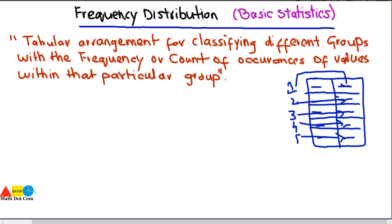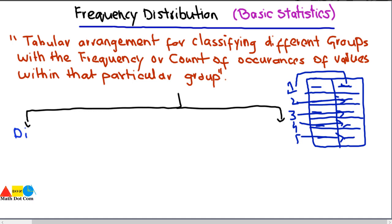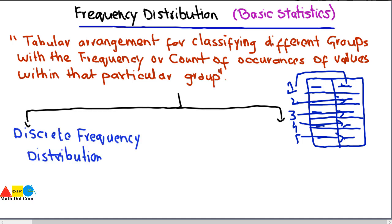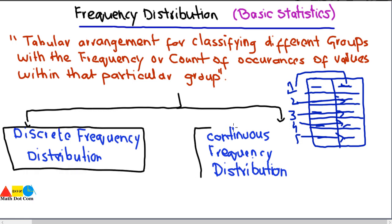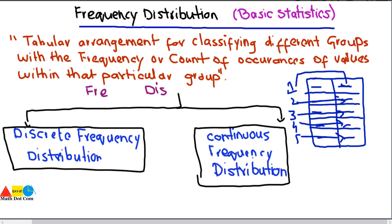There are two types of frequency distribution tables: one is discrete frequency distribution and the other is continuous frequency distribution. In today's lecture we will discuss discrete frequency distribution, and in the next lecture we will see how to make a continuous frequency distribution table.